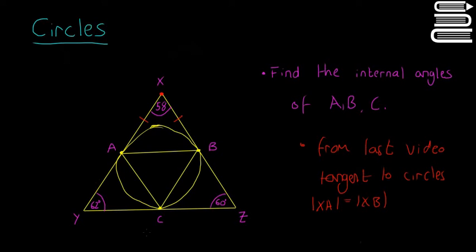We can do this for every line in the triangle. From Y, the two lines YA and YC are also the same length, so we put two tick marks on those. YA equals YC. If you're not totally sure why that is, check out the last video, or drop a question in the comments.